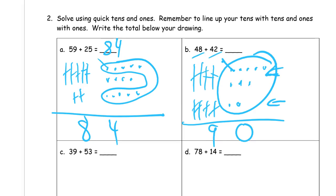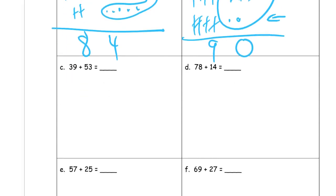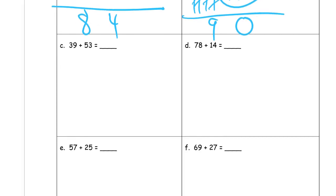Now, you don't have to cross off your tens as you count them like I'm doing — I'm just doing it because I have to show somehow that I'm counting them. If you'd like to do it to keep track of which ones you've counted and which ones you haven't, that's fine. You can cross them out as you go or mark them or however you do it. But you don't have to cross them off the way I'm doing it — that's not something you have to do.